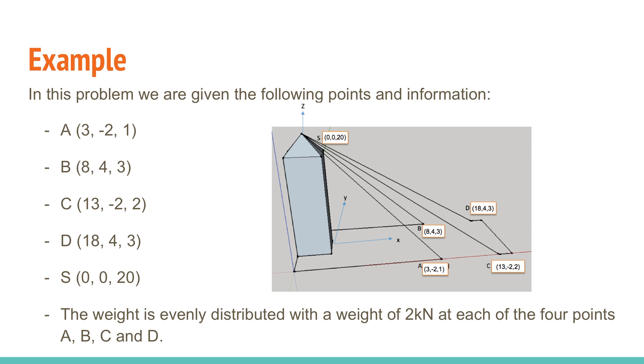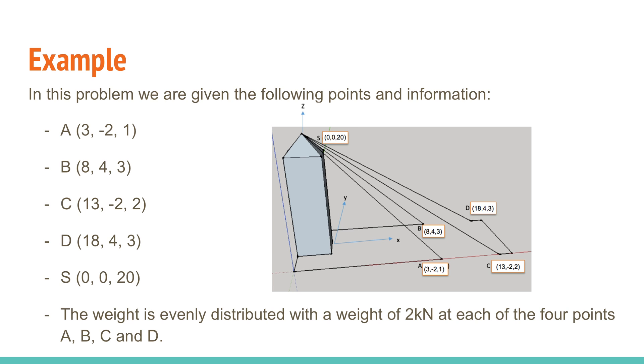Thanks Ben. In the problem mentioned we are given the problem points A, B, C, D and S as shown. We are also told that the weight is distributed evenly with a weight of 2kN at each of the four points A, B, C and D. The vectors along each tie can be easily calculated by subtracting each component of the point S by the corresponding point as seen.